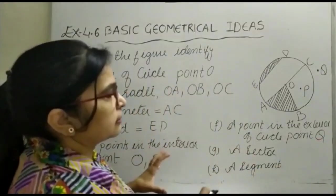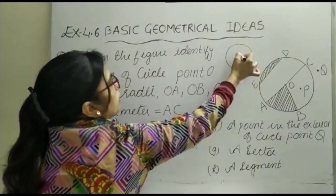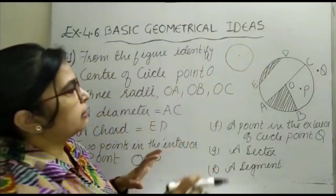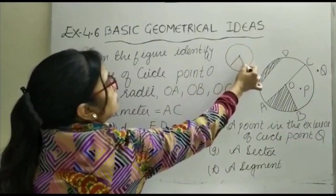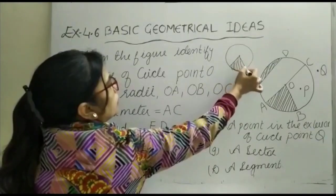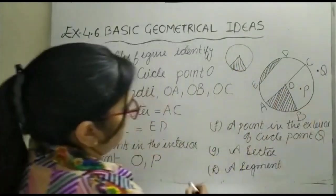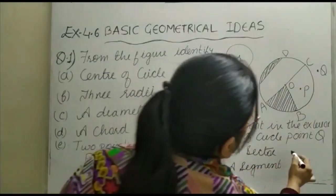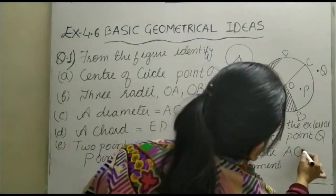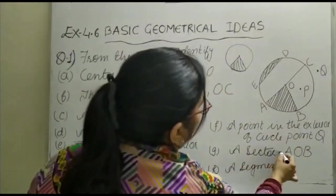A sector is the area bounded by two radii and an arc. Here, the sector is AOB.